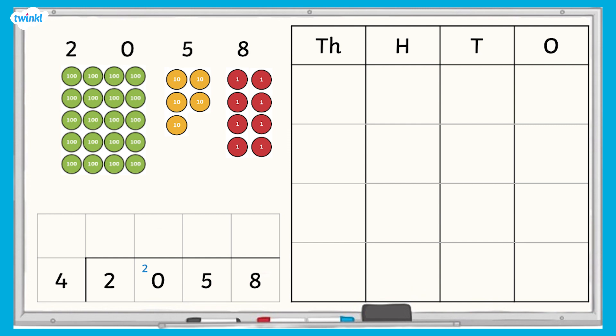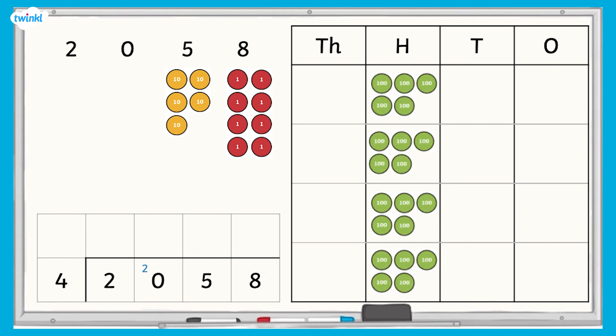Now, we divide the hundreds. We have twenty hundreds. Twenty hundreds divided by 4 equals five hundreds with none left over. We write a 5 in the hundreds column above the line.